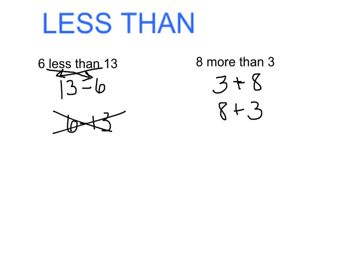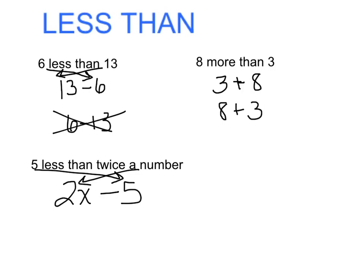Let's try a few examples using less than. Five less than twice a number. Twice a number means you are taking two times some number. Five less than that would be subtracting five. The less than switches the order. If you see the words less than, you must flip the order. How would you write the expression x less than a? That would be a minus x.